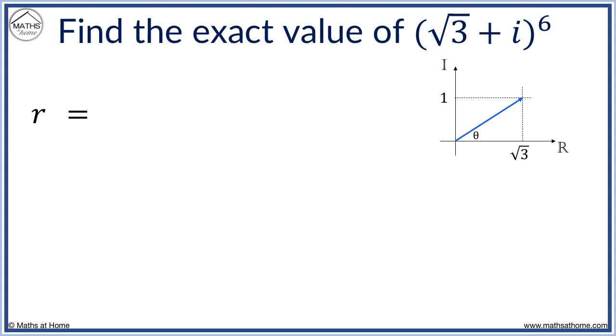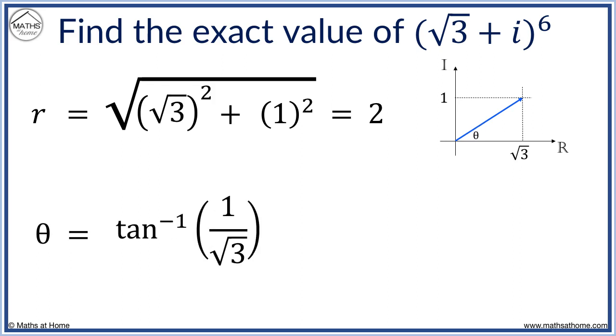The modulus is given by the square root of root 3 squared plus 1 squared. This equals 2. The argument is the angle theta, which equals arc tan 1 over root 3, which equals pi over 6.